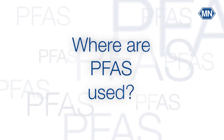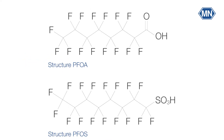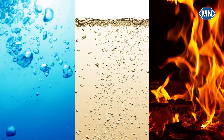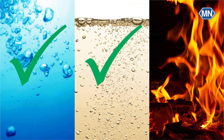Where are PFAS used? PFAS are used in industry extensively due to their unique desirable physical and chemical properties. The carbon chain of the compound is hydrophobic and lipophilic, while the head group has hydrophilic properties. Due to their amphilic character, they are employed as surfactants, as they are water and oil repellent.